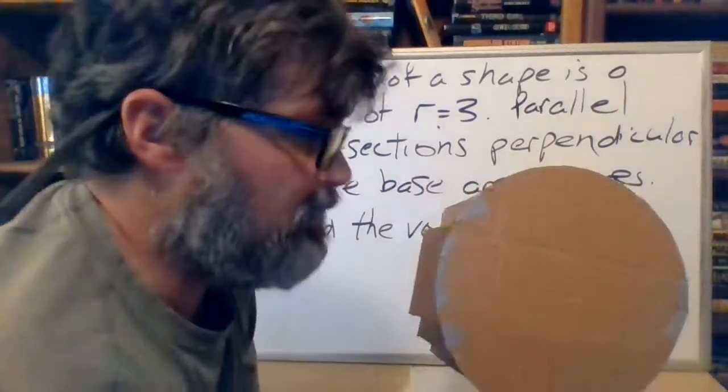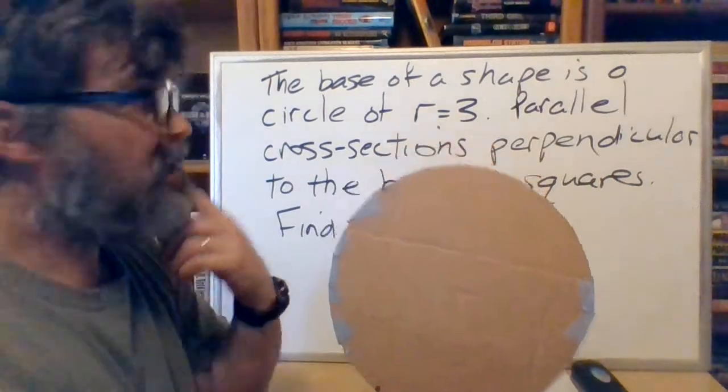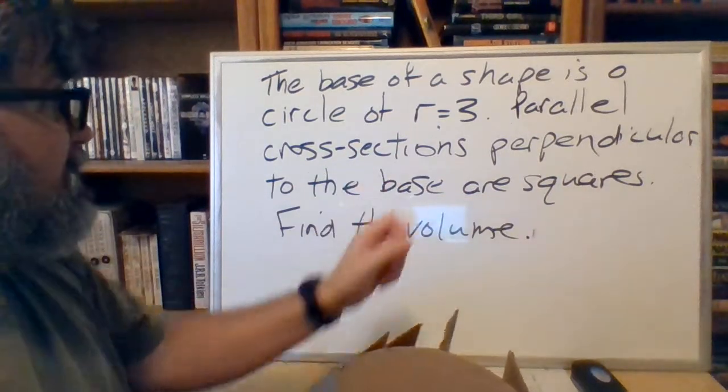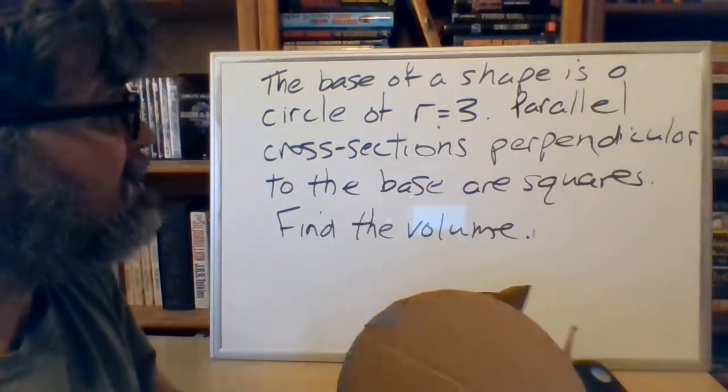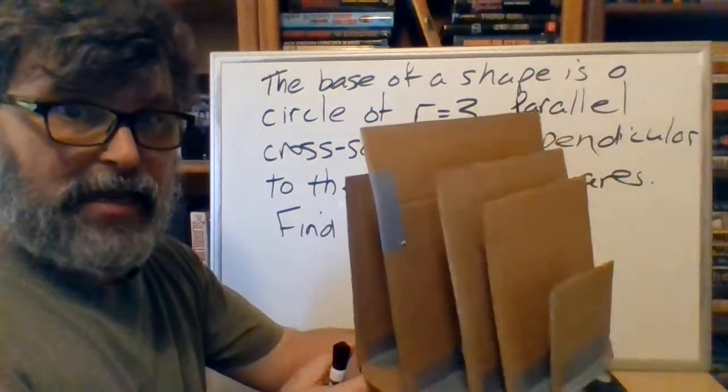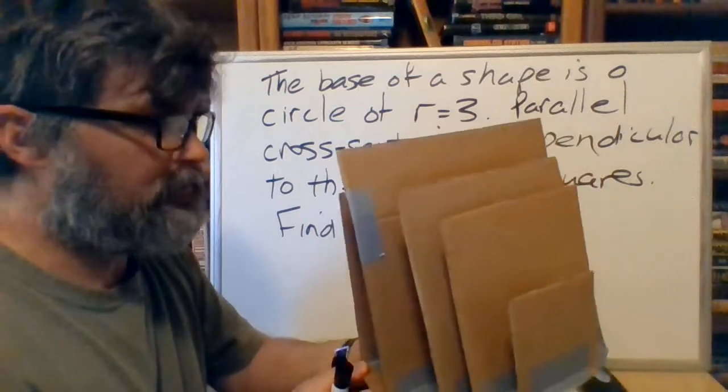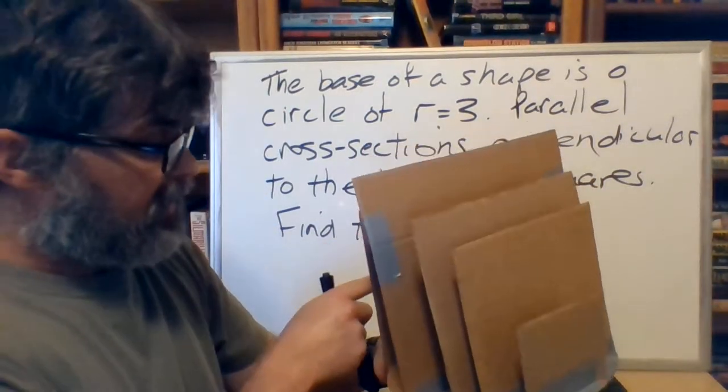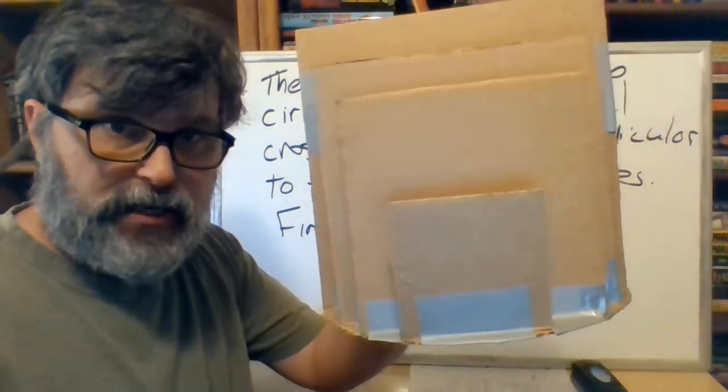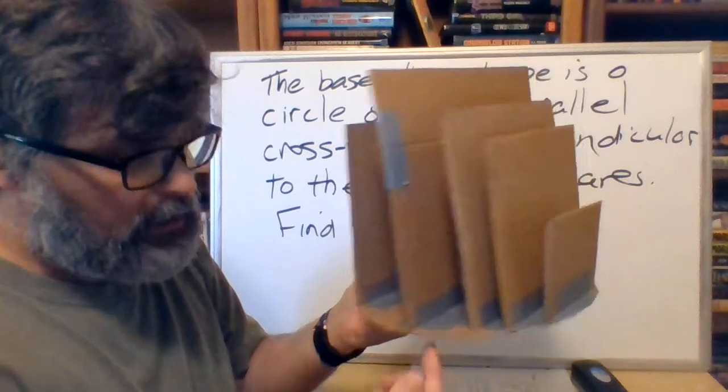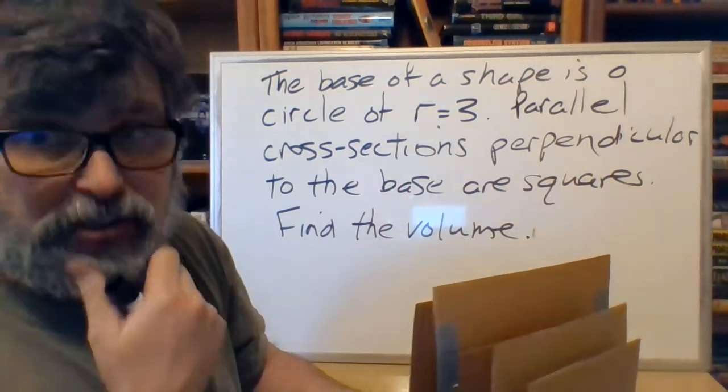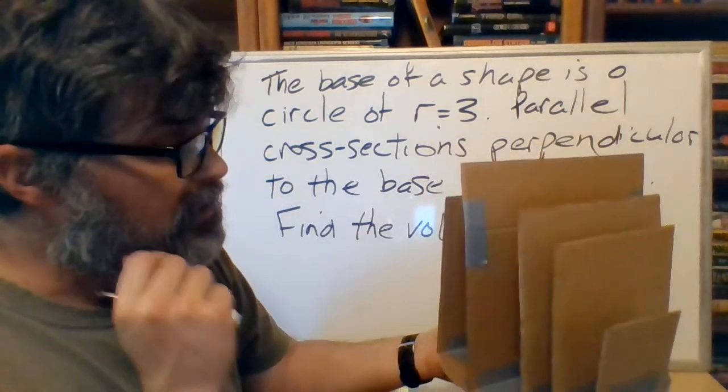So, here is the base of my shape. Right there. It's a circle. That is the base with some sort of radius three. I'm going to have parallel cross-sections perpendicular to the base. Meaning, I want them to do this. Ta-da! Cut up Amazon box. It's perfect. Since everybody's getting everything in the mail these days, I have a bunch of squares. Look, squares going on into that. And one side of the square is on the base. Should have written that down in the question. Well, sorry.